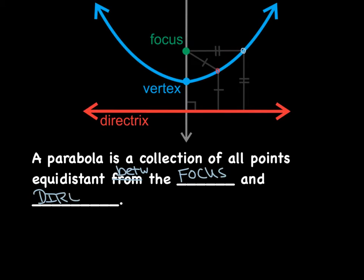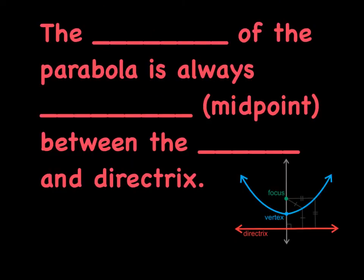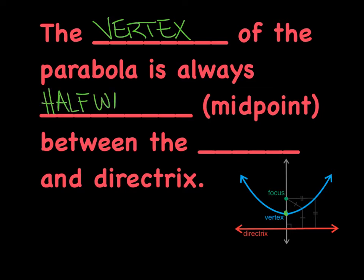Equidistant is a very fun word to say. This means the distance from here to here is equal to the distance from there to there. A real huge point to keep in mind is the characteristics of the vertex. The vertex of the parabola is always halfway between the focus and the directrix — or we'd say the vertex is the midpoint between the focus and the directrix.